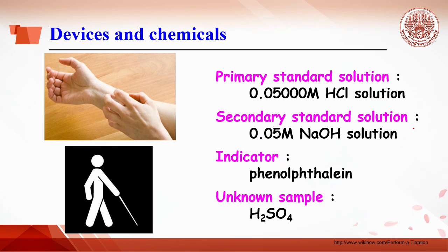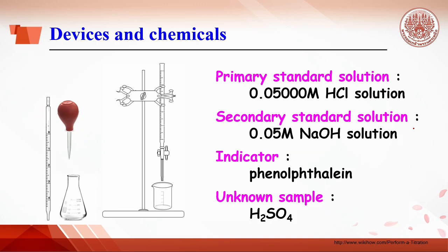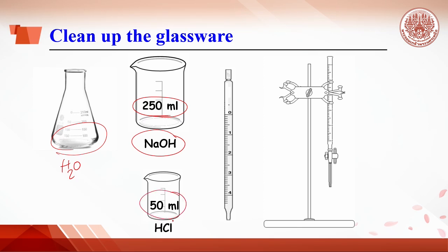The equipment for today is quite common for chemists: a pipette, a pipette bulb, an Erlenmeyer flask, a buret with a stand and buret clamp, a beaker, and a wash bottle. All glassware must be properly rinsed before use. The Erlenmeyer flask should be rinsed several times with distilled water. A 250 ml beaker is used for the stock sodium hydroxide solution, so it should be dry or rinsed with sodium hydroxide solution. A 50 to 100 ml beaker is used for the stock acid solution and should likewise be dry or rinsed with that solution.